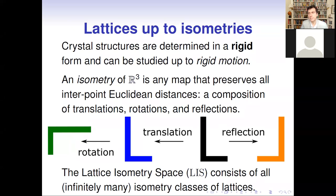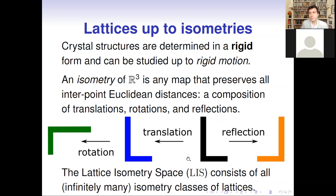We include reflections not because it's hard to exclude them, but because this is the most basic generic case. In the future we will consider lattices only up to rigid motion or orientation-preserving isometries, and also up to similarities, similarly to the two-dimensional case. If we fix our equivalence relation as isometry, the resulting space of equivalence classes — the lattice isometry space — contains infinitely many classes of lattices.